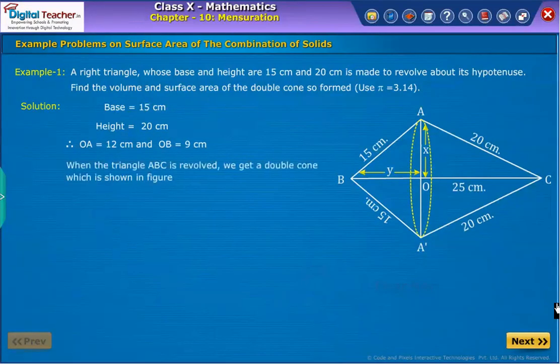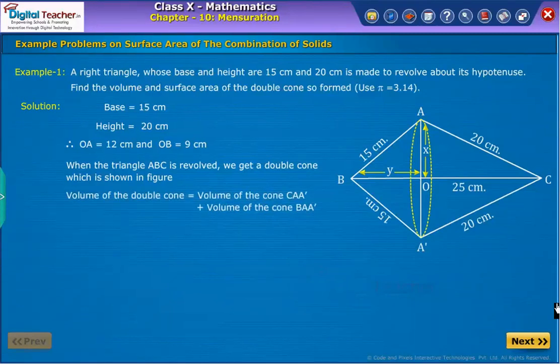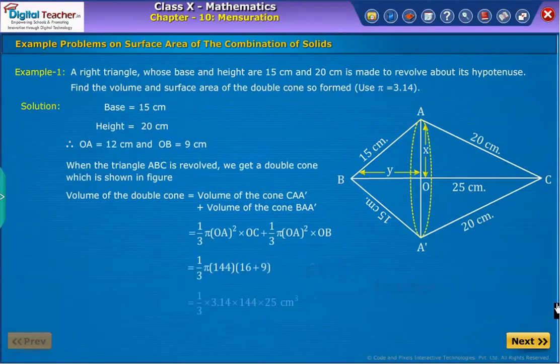Since triangle ABC is revolved about the hypotenuse, we get a double cone as shown in the figure. So, to obtain the volume of the double cone, we need to add volume of cone CAA dash and volume of cone BAA dash. From the figure, we obtain volume of cones CAA dash and BAA dash as shown. By further solving, we get volume of double cone as 3768 cubic centimeters.